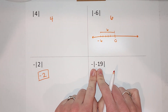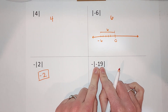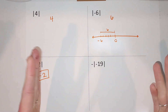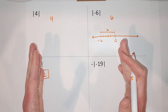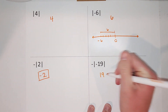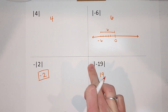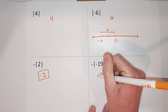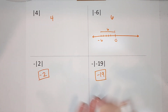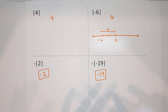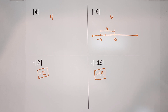Same thing here: the inside is negative, but the answer to the absolute value part is always positive. The distance from negative nineteen to zero is nineteen. Then we have the negative on the outside, so the final answer is negative nineteen. Hopefully that made sense and was easier than you thought — good luck on your homework!